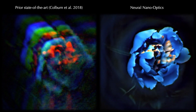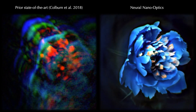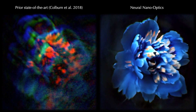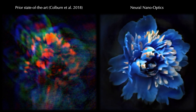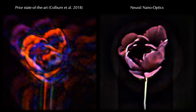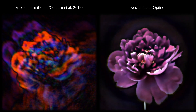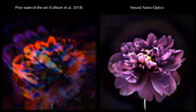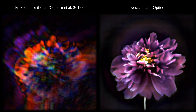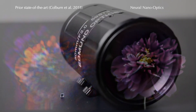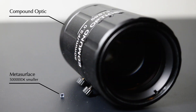Neural nano-optics significantly outperforms the previous state-of-the-art, and is the first meta-optics imager that achieves high-quality, wide-field-of-view color imaging. Our nano-camera demonstrates significant improvement in resolution, color accuracy, and reduced aberrations over the previous state-of-the-art. Neural nano-optics can achieve the same quality as a conventional camera despite being over 500,000 times smaller in size.